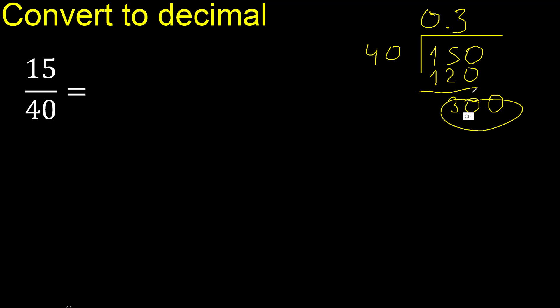300. 40 multiply by which number? 40 multiply by 8 is greater, multiply by 7 is not greater. Subtract is 20.